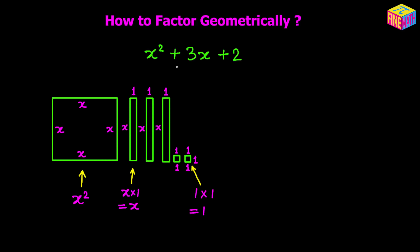That gives us our original expression, which is x squared plus 3 times x plus 2. From here, we want to rearrange these figures in such a way that we either get a square or a rectangle. Because our expression is not a perfect square, we will not be able to draw another square using these areas. Instead, we will be able to draw a rectangle whose area will ultimately be equal to our original expression. So let's try to draw the rectangle first.